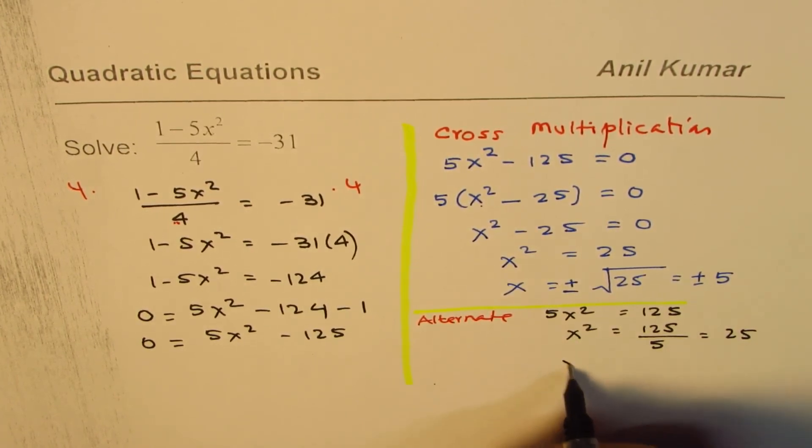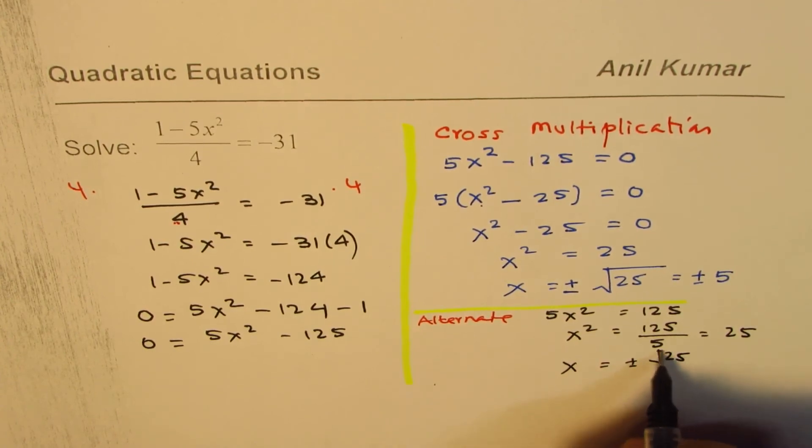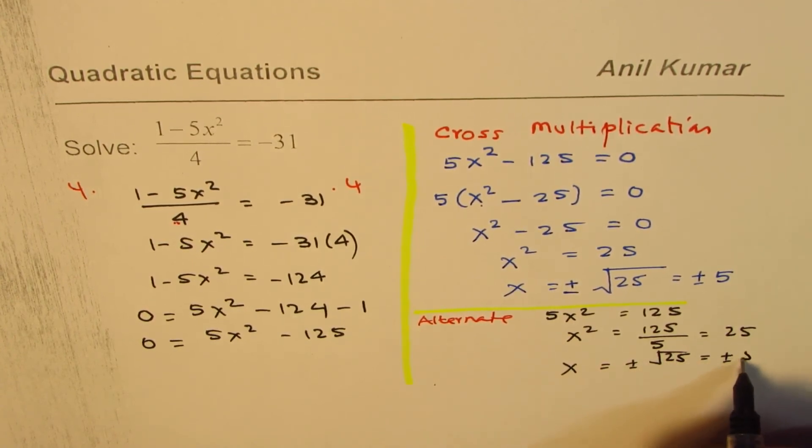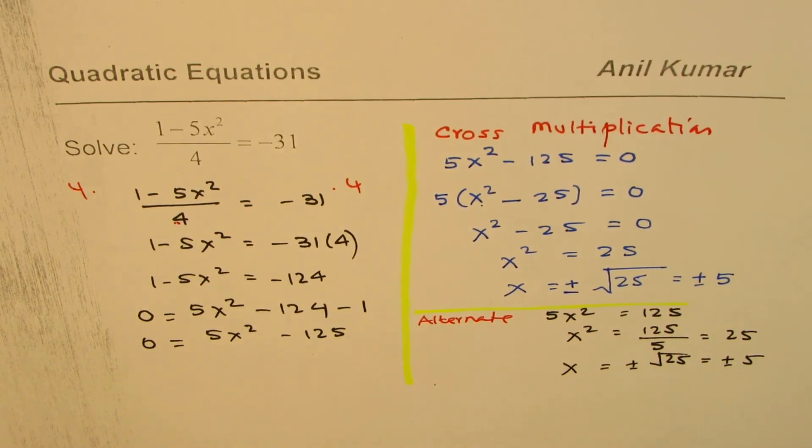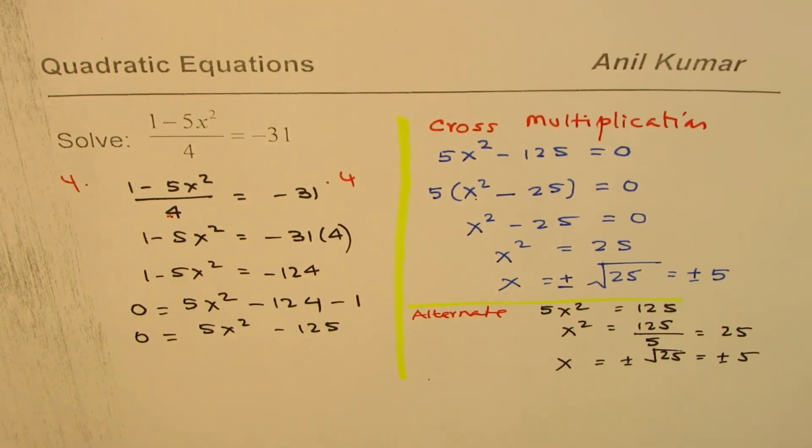And now taking square root will give us x equals plus minus square root of 25. And the answer is exactly the same, plus minus 5. So that is how you could actually solve this kind of question.